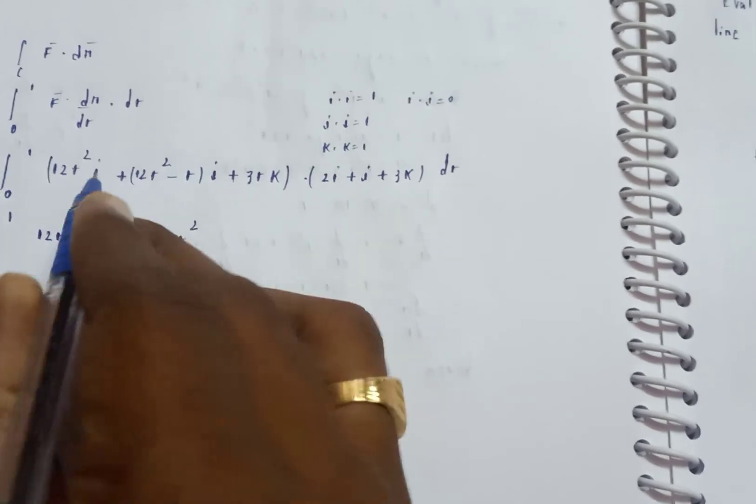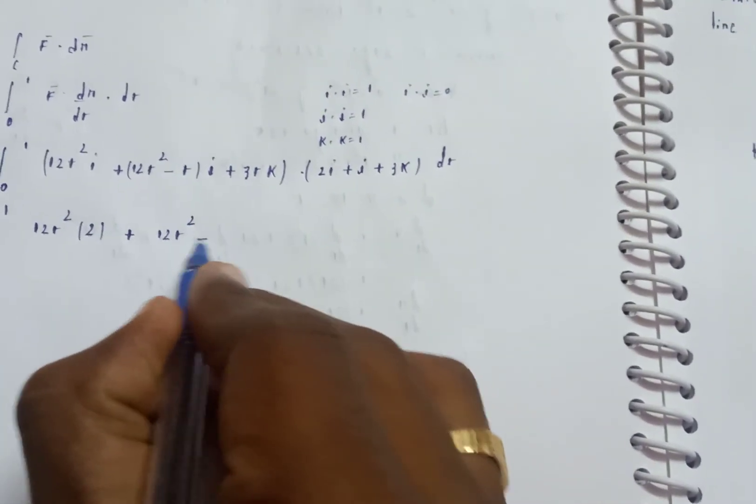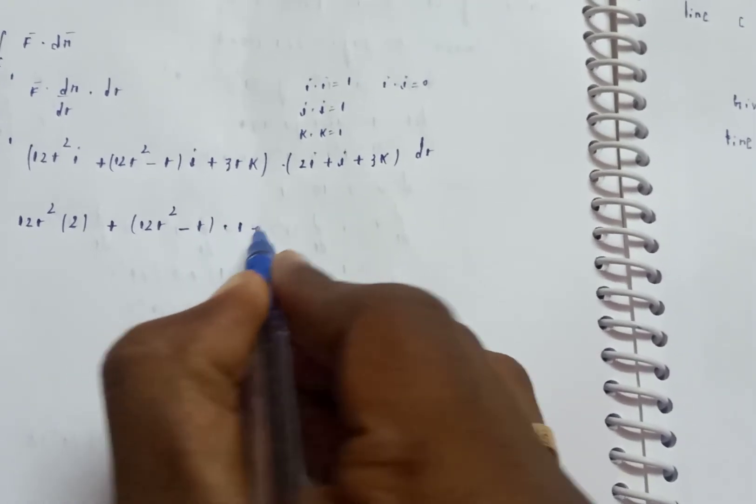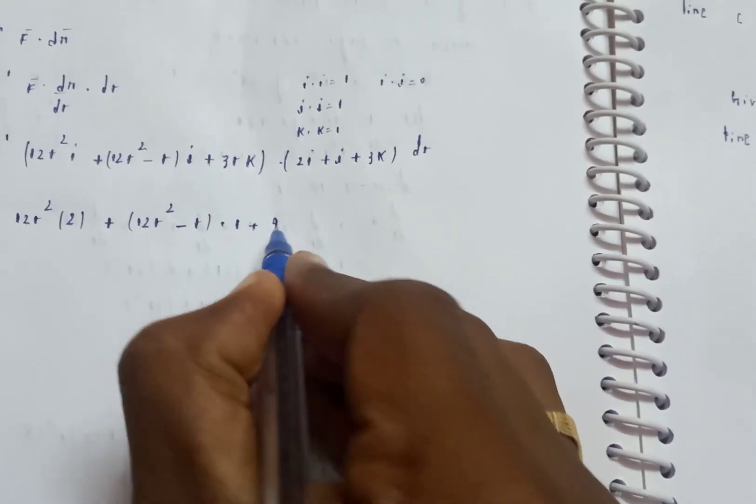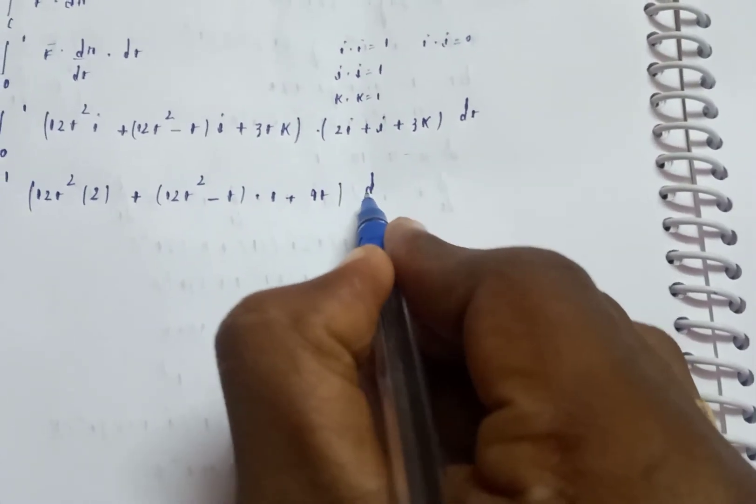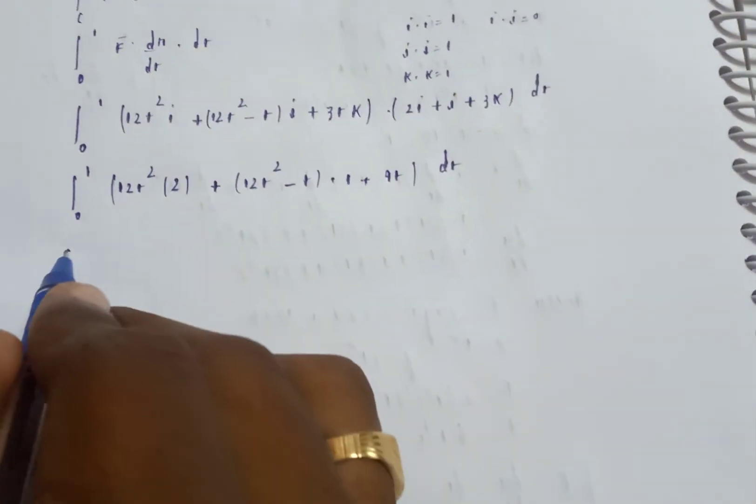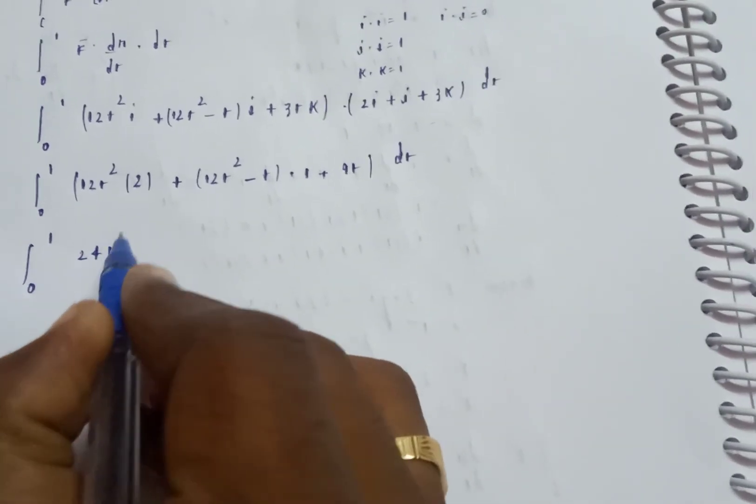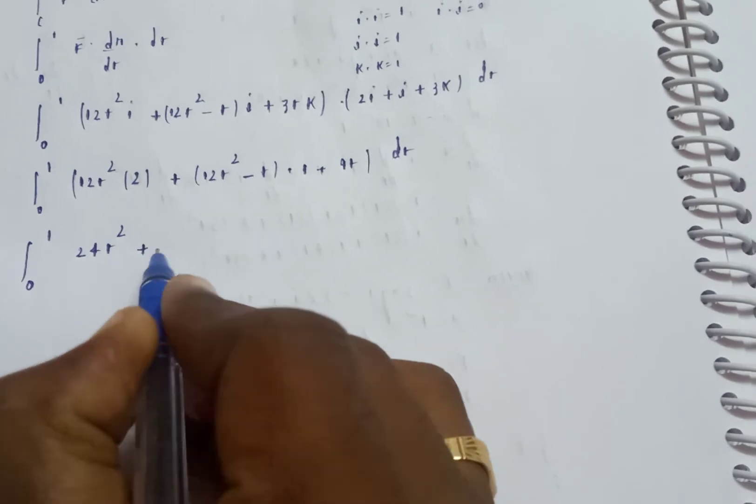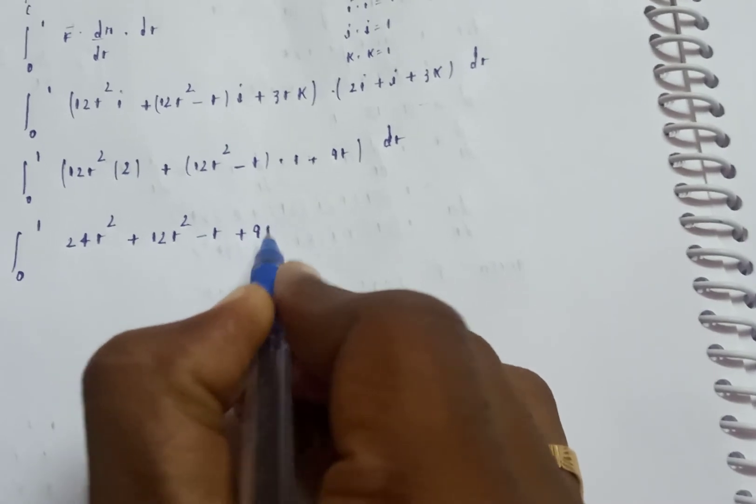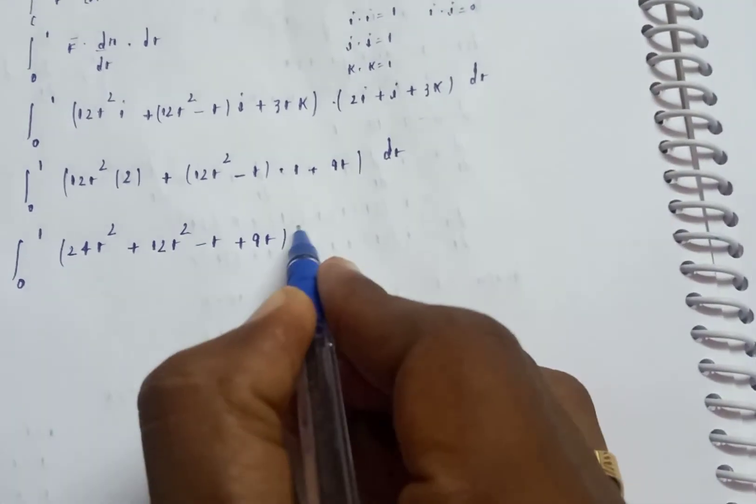Computing the dot product: 12t times 2 gives 24t square, plus (12t square minus t) times 1, plus 3t times 3 equals 9t. So integral 0 to 1 of (24t square plus 12t square minus t plus 9t) dt.